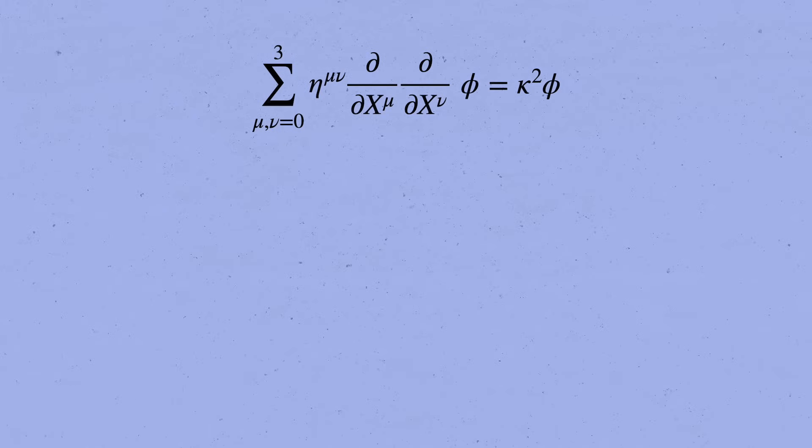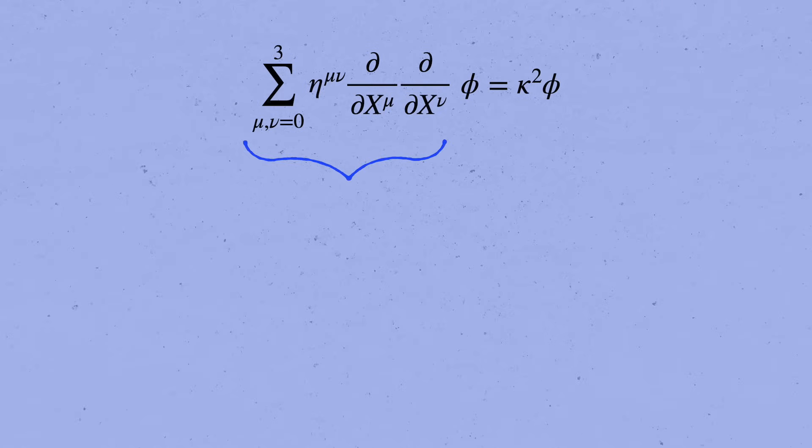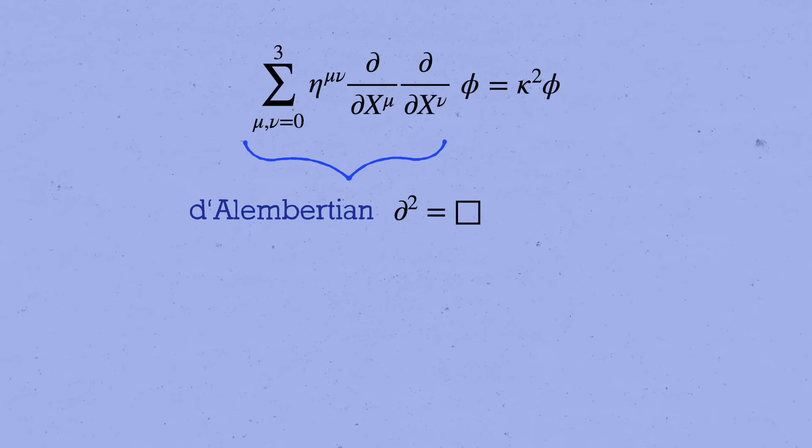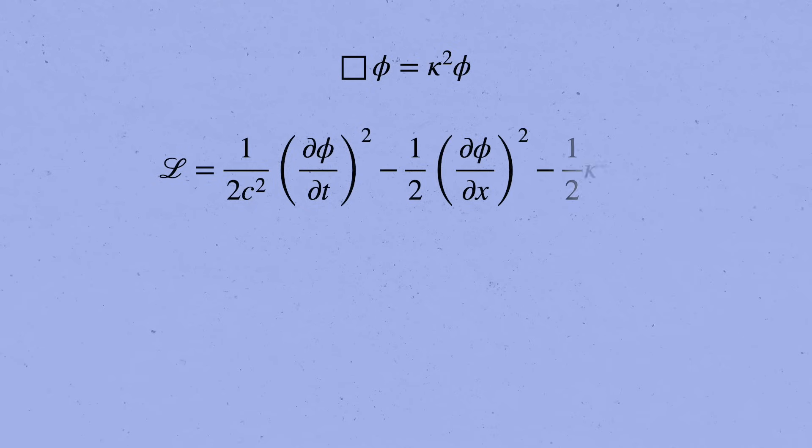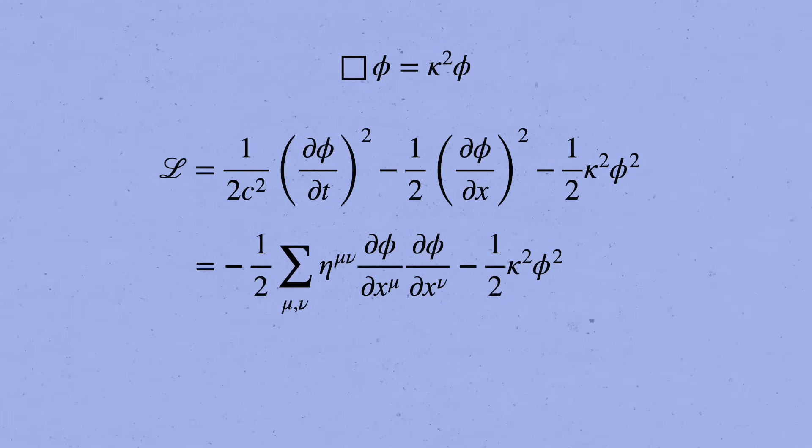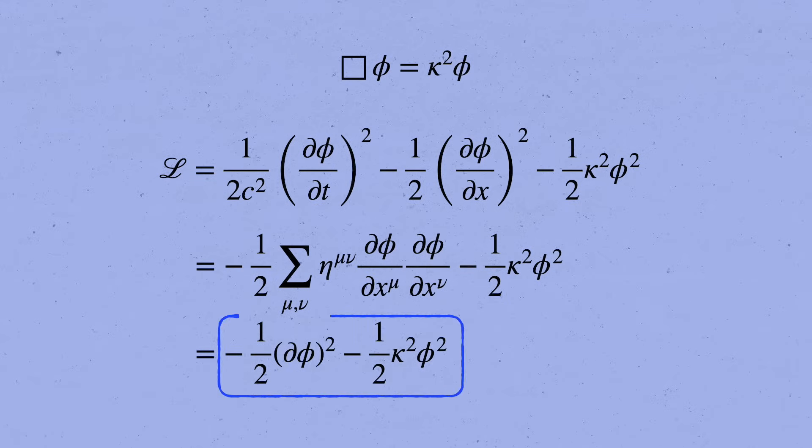You'll learn more about how all that works as you study more special relativity. This relativistic combination of second derivatives is called the Dalembertian operator, and it's usually written simply as d squared or even just box, and so you'll often see the Klein-Gordon equation written even more compactly as box phi equals kappa squared phi. We can also use this relativistic notation to clean up the Klein-Gordon Lagrangian that we started with, again by summing up the derivatives with eta mu nu. We usually write this even more compactly as minus half d phi squared minus half kappa squared phi squared, where it's implied here that we're summing up the derivatives of phi with the Minkowski metric.